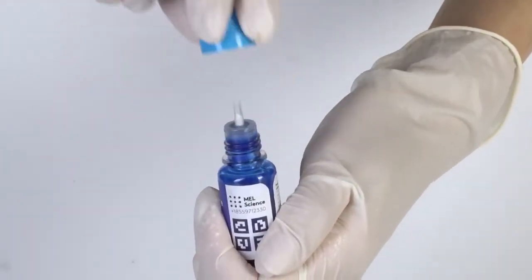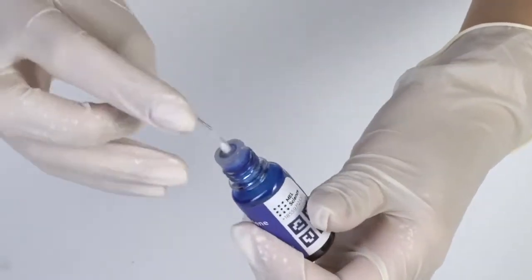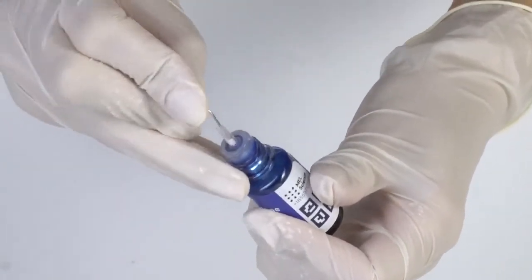To open a bottle with a reagent, push the cap and turn it. Pierce the bottle nozzle with an unfolded paper clip.